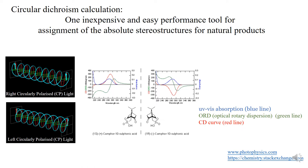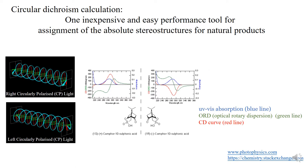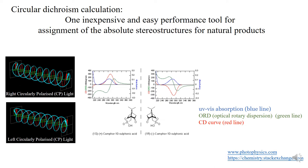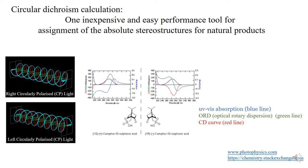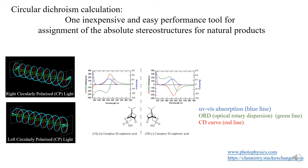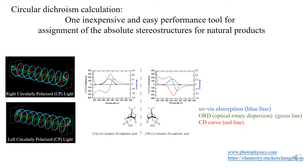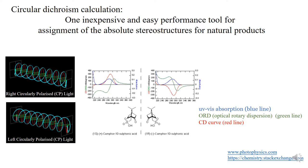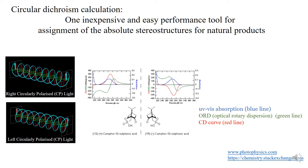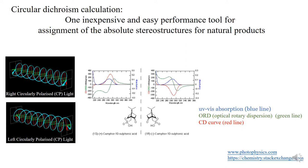When polarized light is passed through a chiral sample, there are two physical phenomena that can be measured. One is called circular birefringence, which measures the difference in the refractive indices and results in ORD curves. The other is called circular dichroism, which measures the difference in the molar extinction coefficients when right and left circularly polarized light passes through the sample. When this difference is plotted against the wavelength, a CD curve results.